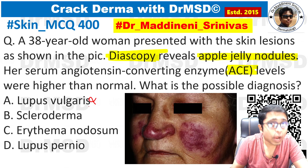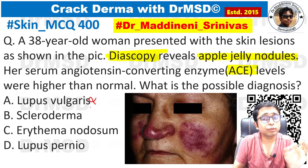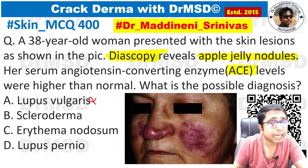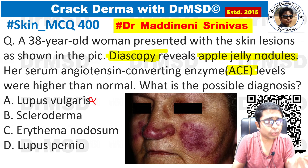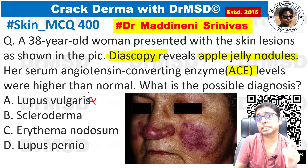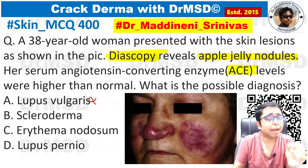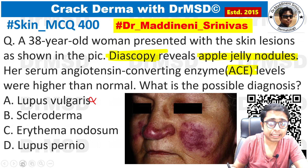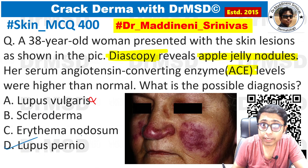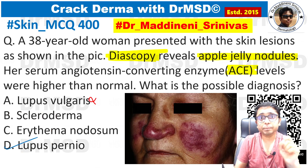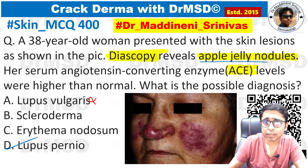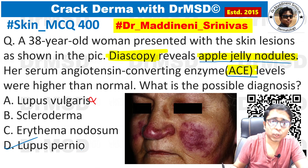But in this MCQ, apart from apple jelly nodules, there is one more clue given: this patient is also having elevated ACE levels. With this, you should know that apart from lupus vulgaris, there is one more dermatological disease in which we can also see apple jelly nodules on diascopy. That other diagnosis is lupus pernio — that is the answer here. Because it is this condition in which both apple jelly nodules and elevated ACE levels can be seen.